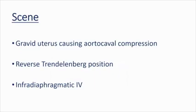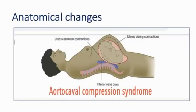Coming back to our patient, what was the scene? There was a gravid uterus causing aortocaval compression which was left unattended. A reverse Trendelenburg position was given fearing high spinal, forgetting that it is going to impede venous return to a larger extent than in non-parturients. A search was going on for infra-diaphragmatic IV access — this is almost criminal for obstetric patients. If no veins can be found on the upper limb, do not hesitate to open the neck veins. The biggest anatomical change in pregnancy is the aortocaval compression syndrome, and in near-miss situations we always miss to consider it.